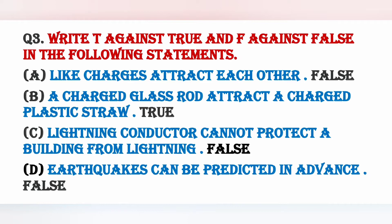Statement C: Lightning conductor cannot protect a building from lightning — this is false. क्योंकि lightning conductors को buildings पर construction के time पर इसलिए लगाया जाता है कि जब भी lightning हो, वो lightning को pass करे और उसे earth में छोड़ दे। So lightning conductor किसी भी building को protect करता है।